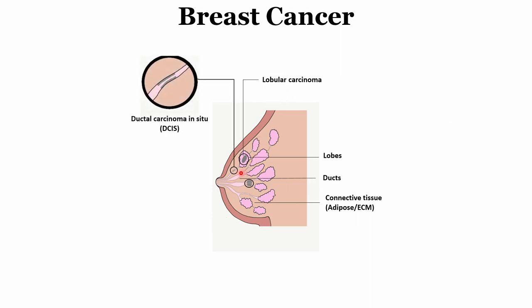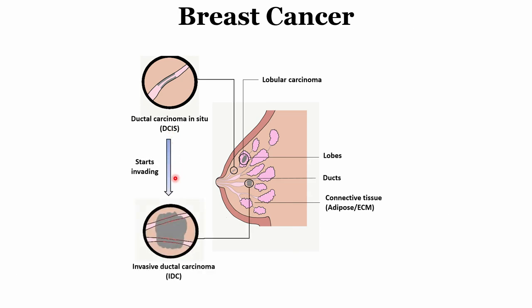Zooming into the duct part, you can see the gray region surrounding the inner surface of the ducts. When it is still within the ducts and has not started to spread, it is known as ductal carcinoma in situ, also known as DCIS. Once it starts to invade or come out of the ducts it is known as invasive ductal carcinoma, and around 80 percent of cases show this type when breast cancer is diagnosed.